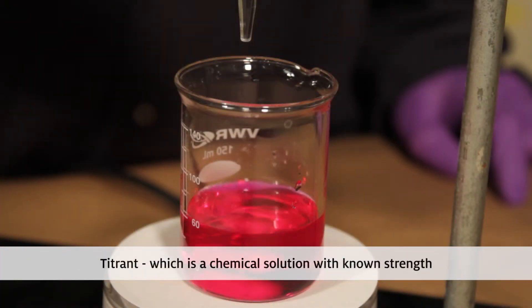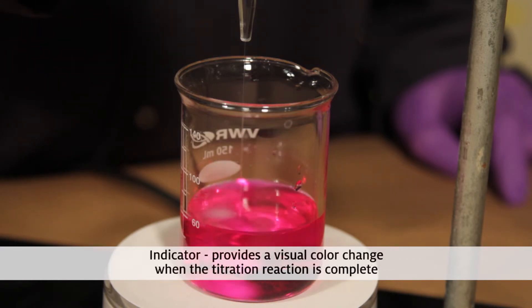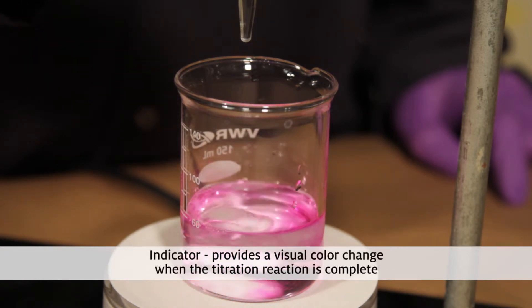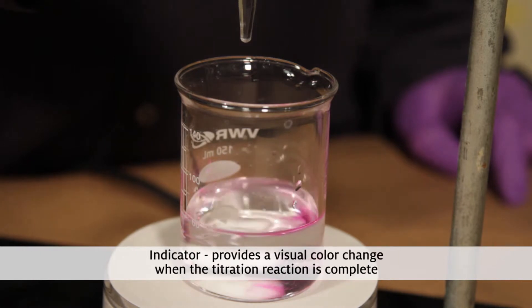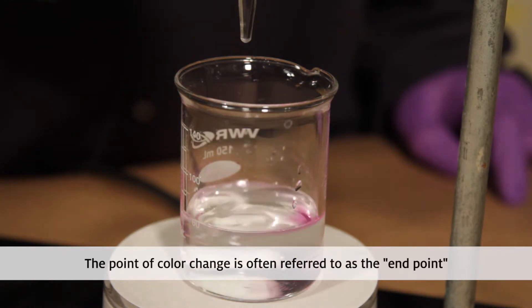Titration test solutions usually include a titrant, which is a chemical solution with known strength, and an indicator, which provides a visual color change when the titration reaction is complete. The point of color change is often referred to as the end point.